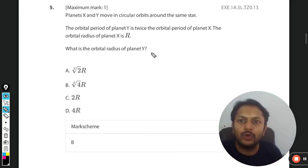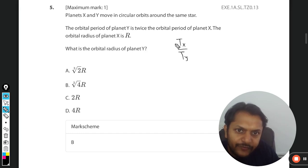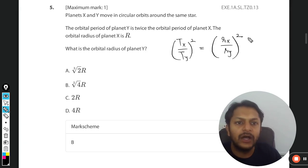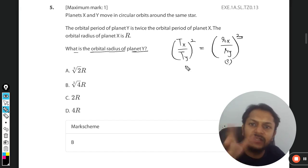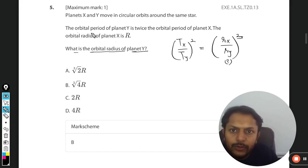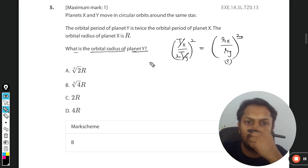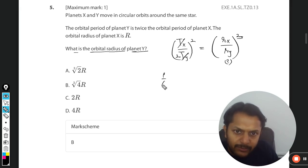Let us now create the equations particularly for this question. So time period for X divided by time period for Y, squared, is equal to r_X divided by r_Y cubed. What is the orbital radius of planet Y? So we want to find r_Y. All other three variables will be given to you. The orbital time period for Y is twice that of X.